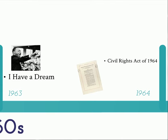On July 2, 1964, President Johnson signed the Civil Rights Act of 1964, which was the most sweeping civil rights legislation since Reconstruction. It prohibits discrimination of all kinds and provides the federal government with powers to enforce desegregation.